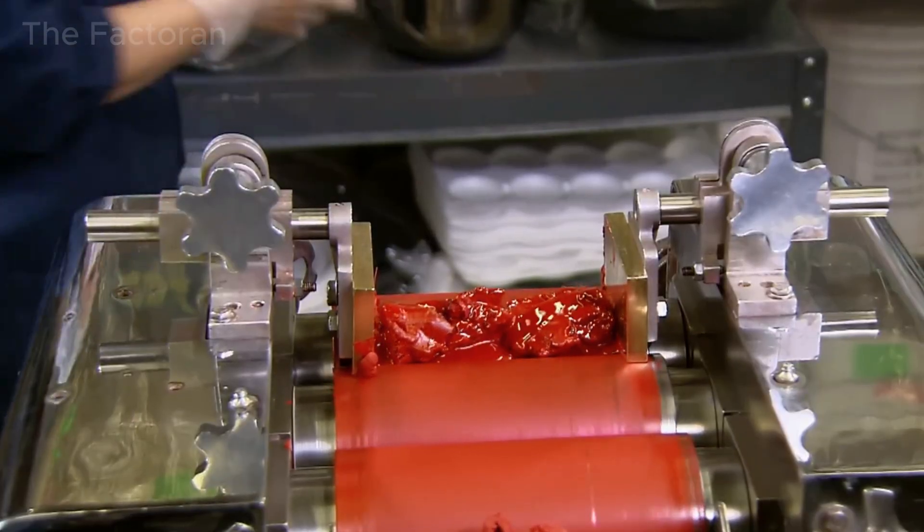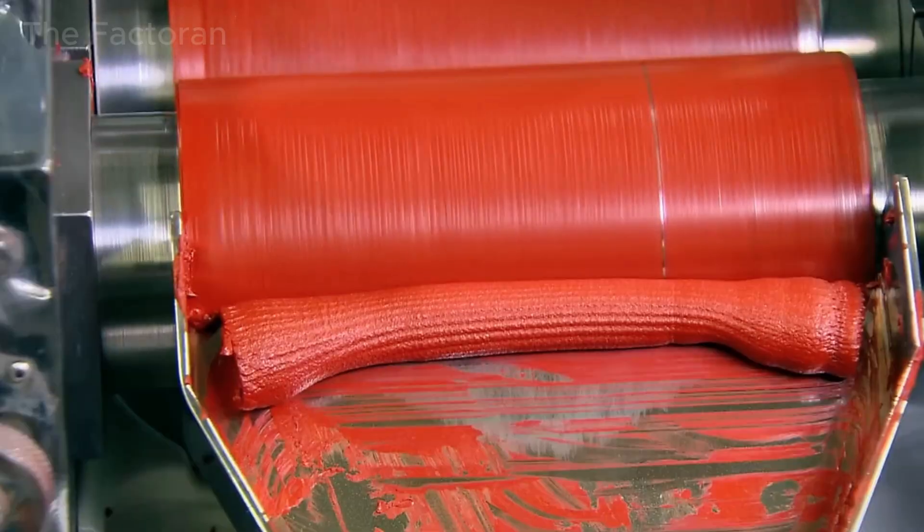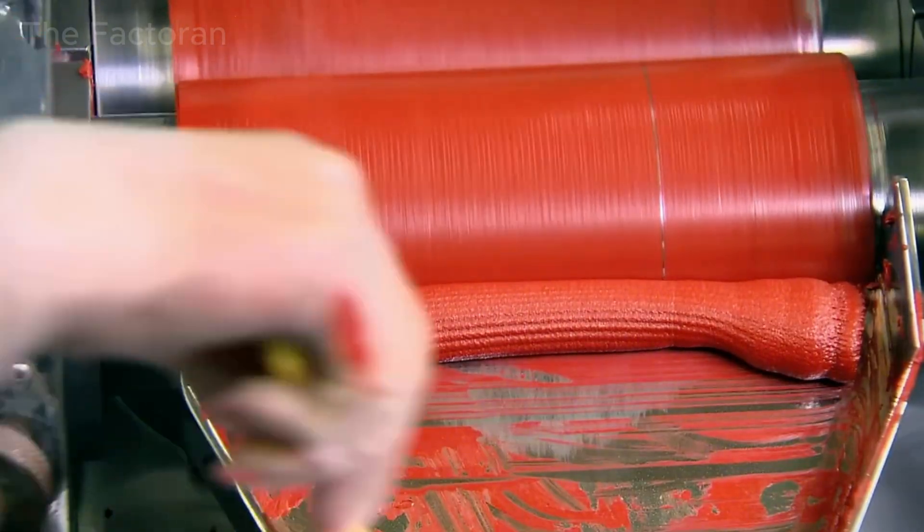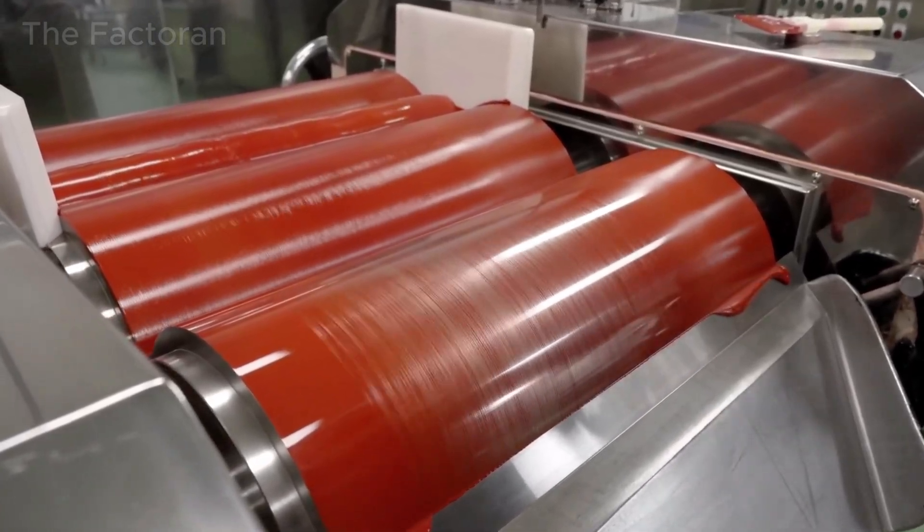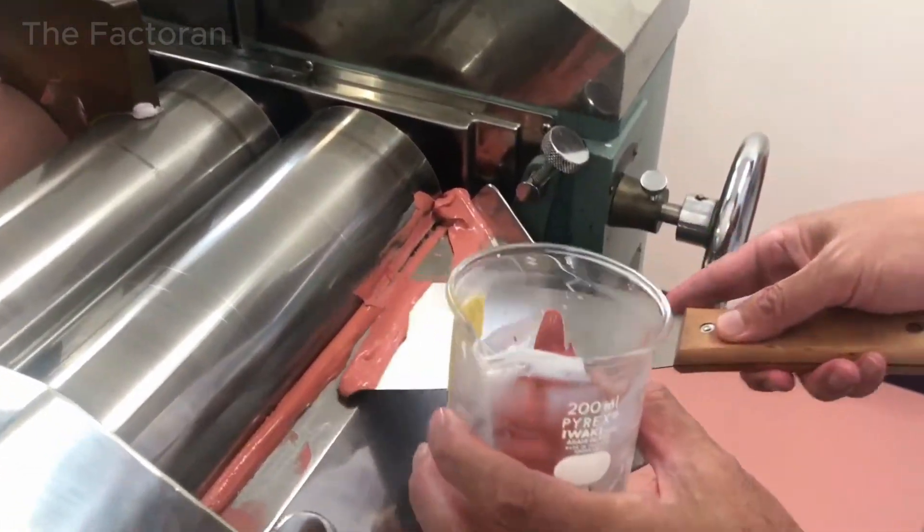To achieve this, the pigments are passed through a system of metal rollers. These rollers both compress and grind the pigments, flattening them into thin layers as they pass through. Typically, the pigments must go through the rolling system at least three times to ensure the color particles are fully refined.